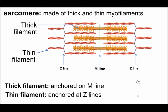You can also start to see that each of the myofilaments — the thick and thin — are made of smaller structures, and that's what we're going to look at next. We'll start with the thin filament and then move to the thick filament.